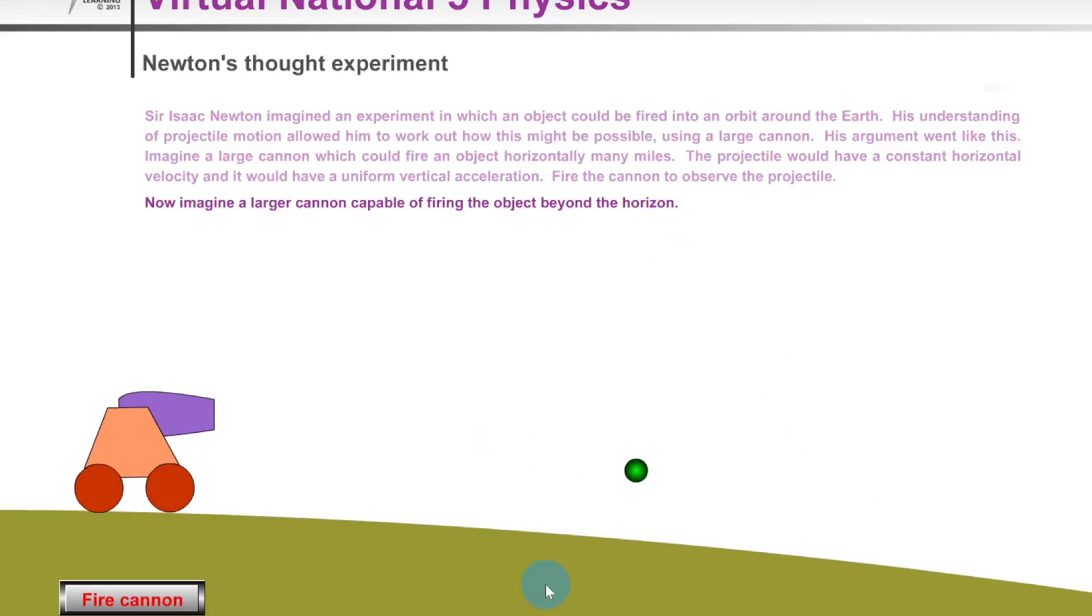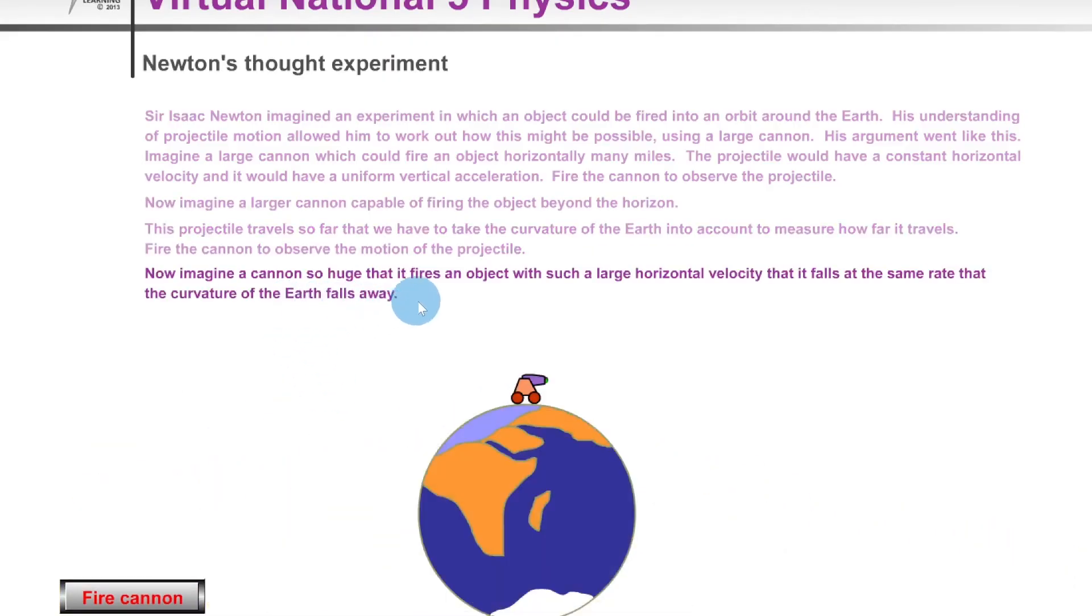Now imagine a larger cannon capable of firing the object beyond the horizon. If I fire the cannon this time, the cannonball travels so far that we need to take into account the curvature of the Earth. Lastly, imagine a cannon so huge that it fires an object with such a large horizontal velocity that it falls at the same rate that the curvature of the Earth falls away.